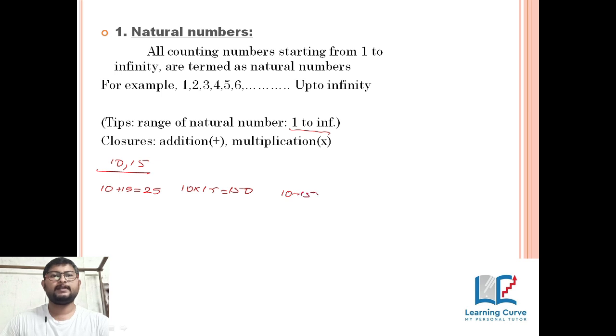But take the case of subtraction and division. 10 minus 15 gives us the answer minus 5, and minus 5 is not at all a natural number. Minus 5 is less than 1, so it's not a natural number. Take the case of division. 10 by 15 gives 2 by 3. This is a fraction and gives us a decimal value which is not countable. So this is also limited. So natural numbers are closed under only addition and multiplication.